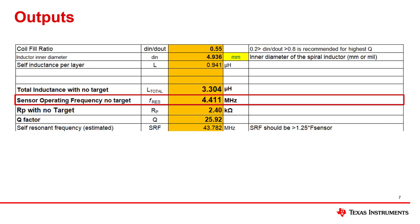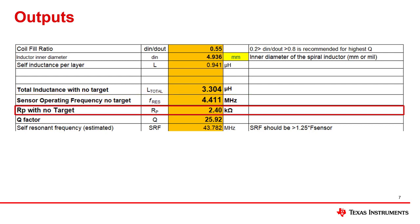Sensor frequency is calculated based on the inductance and sensor capacitance. This is without target interaction, so it's the lowest frequency that will occur for the sensor. The operating frequency of my sensor is a little too low for the selected device, but since it will change when the target is considered, no action is needed yet. Next is the RP, or parallel resistance. If the RP is too low, the LDC may not be able to effectively drive the sensor, but this is not a concern for my current design.